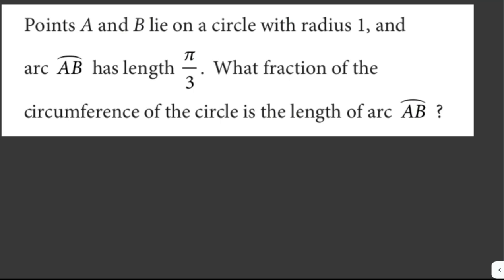To solve for the circumference of the circle, we use the formula C = 2πr, where r is the radius. It is given that the radius of the circle is equal to 1.